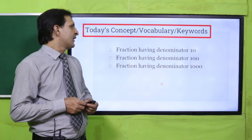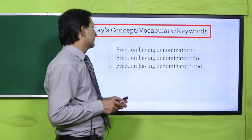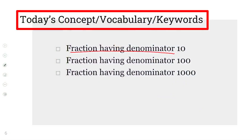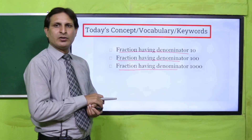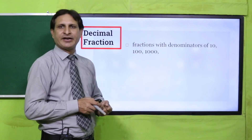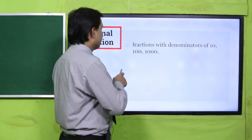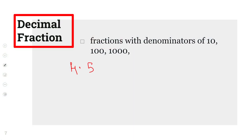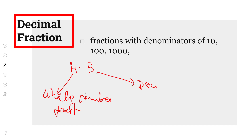आज के main keywords हैं: fractions having denominator 10, fractions having denominator 100, and fractions having denominator 1000. इन चीज़ों को आज के lesson में detail में discuss करेंगे। Decimal fraction यानी fraction with denominator of 10, 100, and 1000 — जैसे हमारे पास four point five है, यह decimal fraction है जिसमें four वाला part whole number part है।